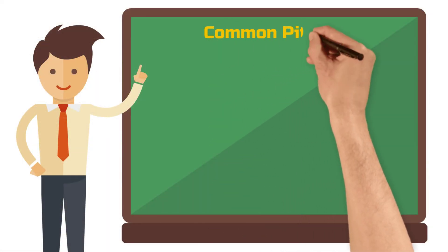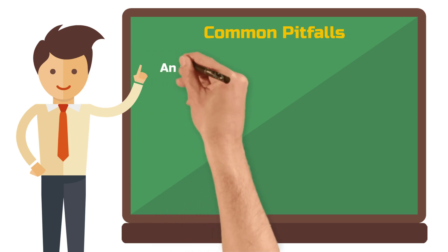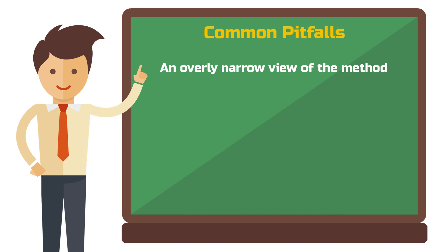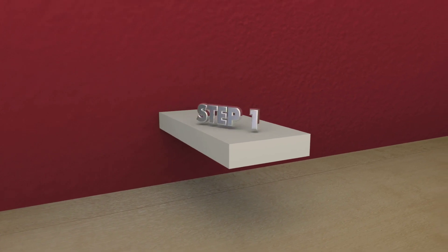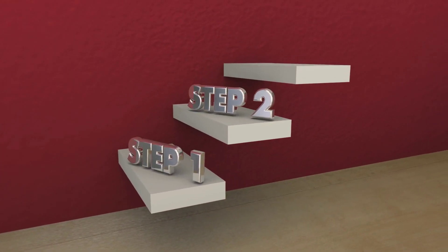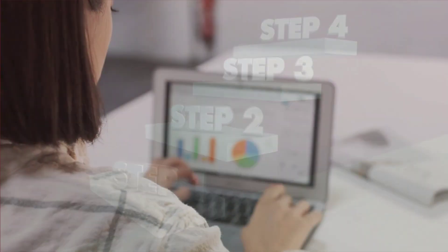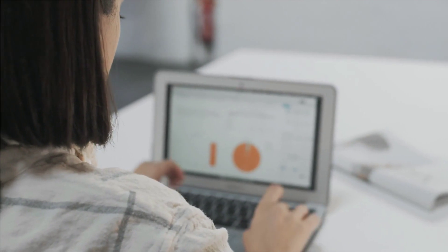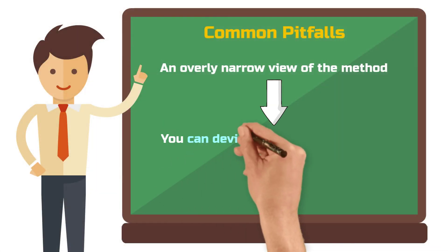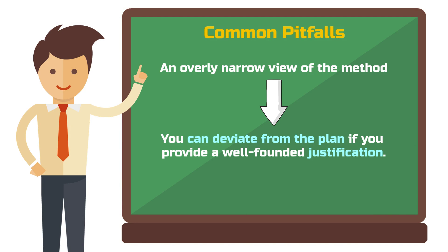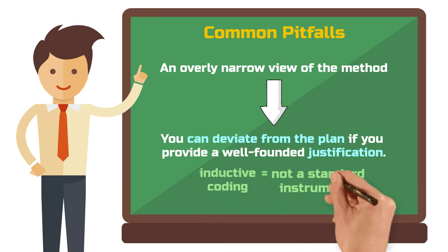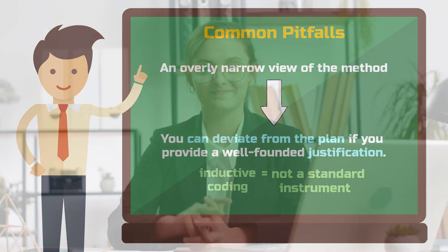Before we end the video, let's look at some common pitfalls in inductive coding. I often observe that the guidance from methods books, especially on inductive coding, is perceived too dogmatically. Students often fear that deviating from the guidelines could be wrong. This is commendable, but if you reach a point with your data where the next step a methods book suggests doesn't work for you, it's up to you as a researcher to make an independent decision, do it differently, and justify it in your methods section. You can and should deviate from the plan if necessary. Qualitative methods are not a standard instrument that always look the same — they must be adapted to the specific material and the specific research question. As long as you proceed systematically, justify your decisions and describe them precisely, everything is fine.